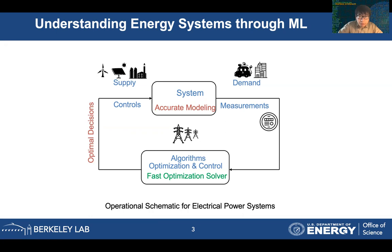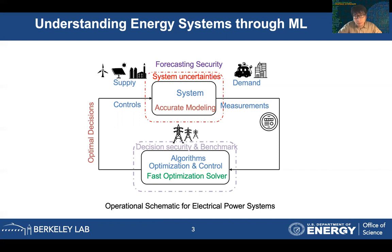Machine learning can definitely help in many ways. For example, it can give you a better model about the system state, and it can help you find good decisions — the most economical or least carbon-intensive solutions for supply and demand balance. We will cover two parts: first, how to design control systems to make sure the decisions are secure, and second, how to deal with system uncertainties to ensure decisions are robust against all stochastic scenarios.